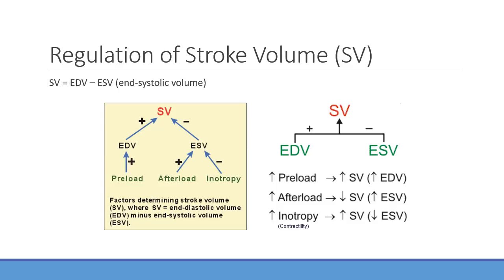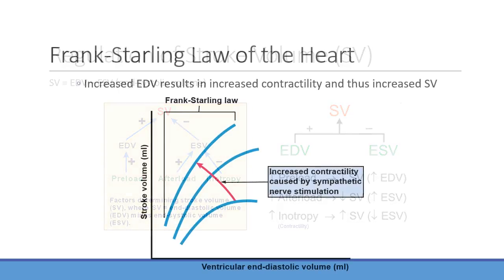Looking at the Frank-Starling law: as end-diastolic volume increases, stroke volume goes up proportionally. The heart doesn't want excess blood left over, so it has stretch receptors in the ventricles that detect extra pressure and volume, responding by increasing contractility to increase stroke volume.